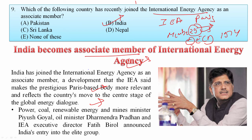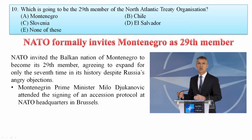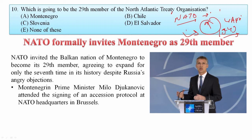Which country is going to become the 29th member of NATO — the North Atlantic Treaty Organization? NATO is an intergovernmental military alliance based on the North Atlantic Treaty, signed on 4th April 1949. It constitutes a system of collective defense where member states agree to mutual defense in response to attack by an external party. NATO invited the Balkan nation of Montenegro to become its 29th member, expanding for the seventh time in its history despite Russia's angry objection.